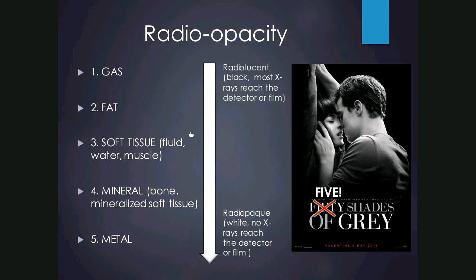In order of increasing radiopacity, we start with gas which is the most radiolucent, appearing black on a radiograph because most X-rays reach the detector or film. Moving up there's fat, then soft tissues which include fluid, water, muscle, organs, or haemorrhage. Then mineral — which is bone or mineralised soft tissue — and then the whitest or most radiopaque is metal.